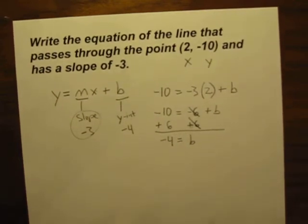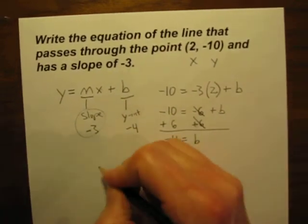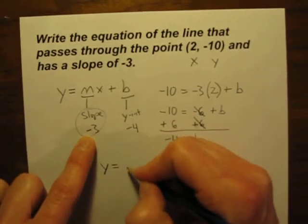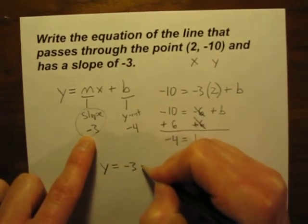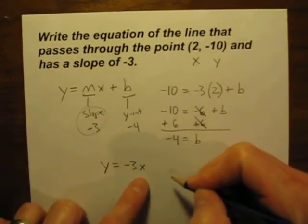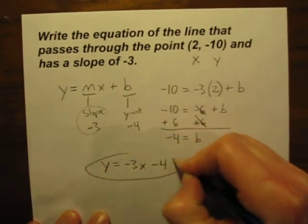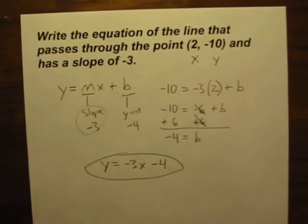We're told what the slope is, we figured out the y-intercept, the only thing that's left is to write it as an equation. So let's write it: y is equal to m, which is our slope negative 3, times x plus our b the y-intercept which is negative 4. There's our equation, that's all it takes.